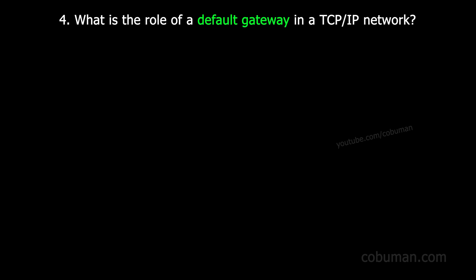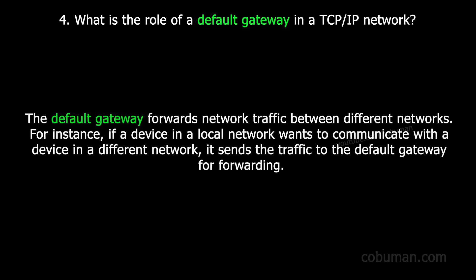Question number four: what is the role of a default gateway in a TCP/IP network? The default gateway forwards network traffic between different networks. For instance, if a device on a local network wants to communicate with a device on a different network, it sends the traffic to the default gateway for forwarding.